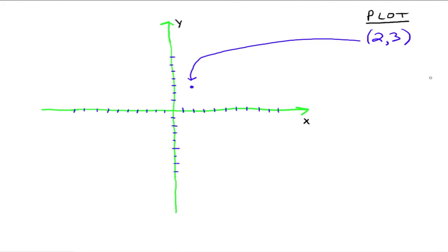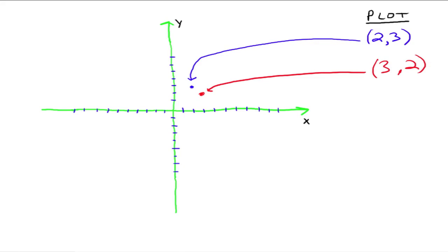If we had (3, 2) instead — remember, the order matters — we go out 3 on the x-axis: 1, 2, 3, and then up 2: 1, 2. That puts you at a different spot entirely. The ordered pair (2, 3) and the ordered pair (3, 2) are different ordered pairs and they plot differently on the xy plane.